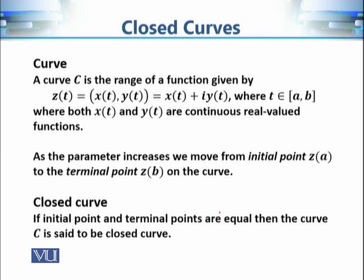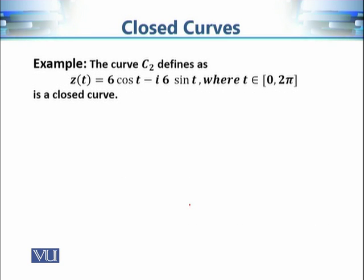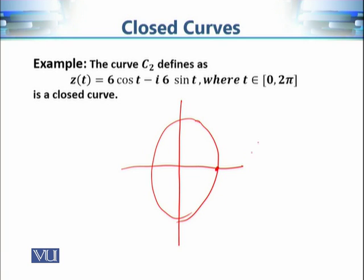When we vary the parameter t, we travel along the curve. When t = a we have the initial point, and when t = b we have the terminal point. If the initial point and the terminal point of the curve are the same, we say the curve is closed. The circle example has the same initial and final point, so it is a closed curve.